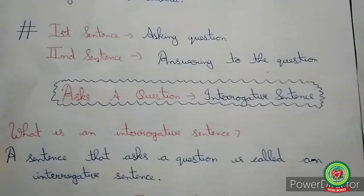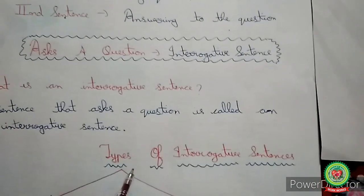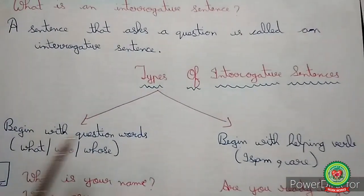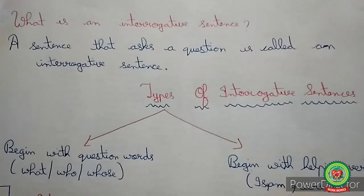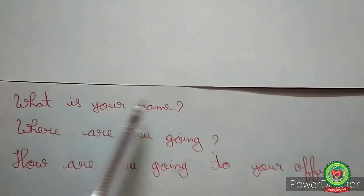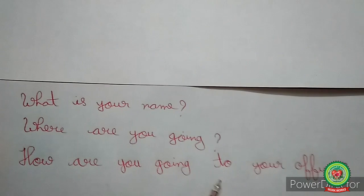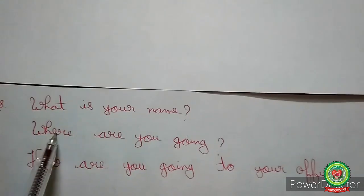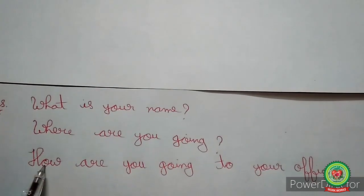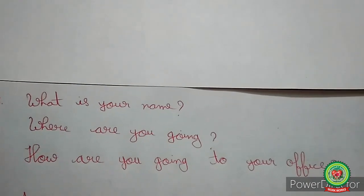Now students, there are two types of interrogative sentences. The first type of interrogative sentences begin with question words like what, who, whose. For example: 'What is your name?', 'Where are you going?', 'How are you going to your office?' These sentences begin with question words — what, where, and how. So these are interrogative sentences beginning with question words.